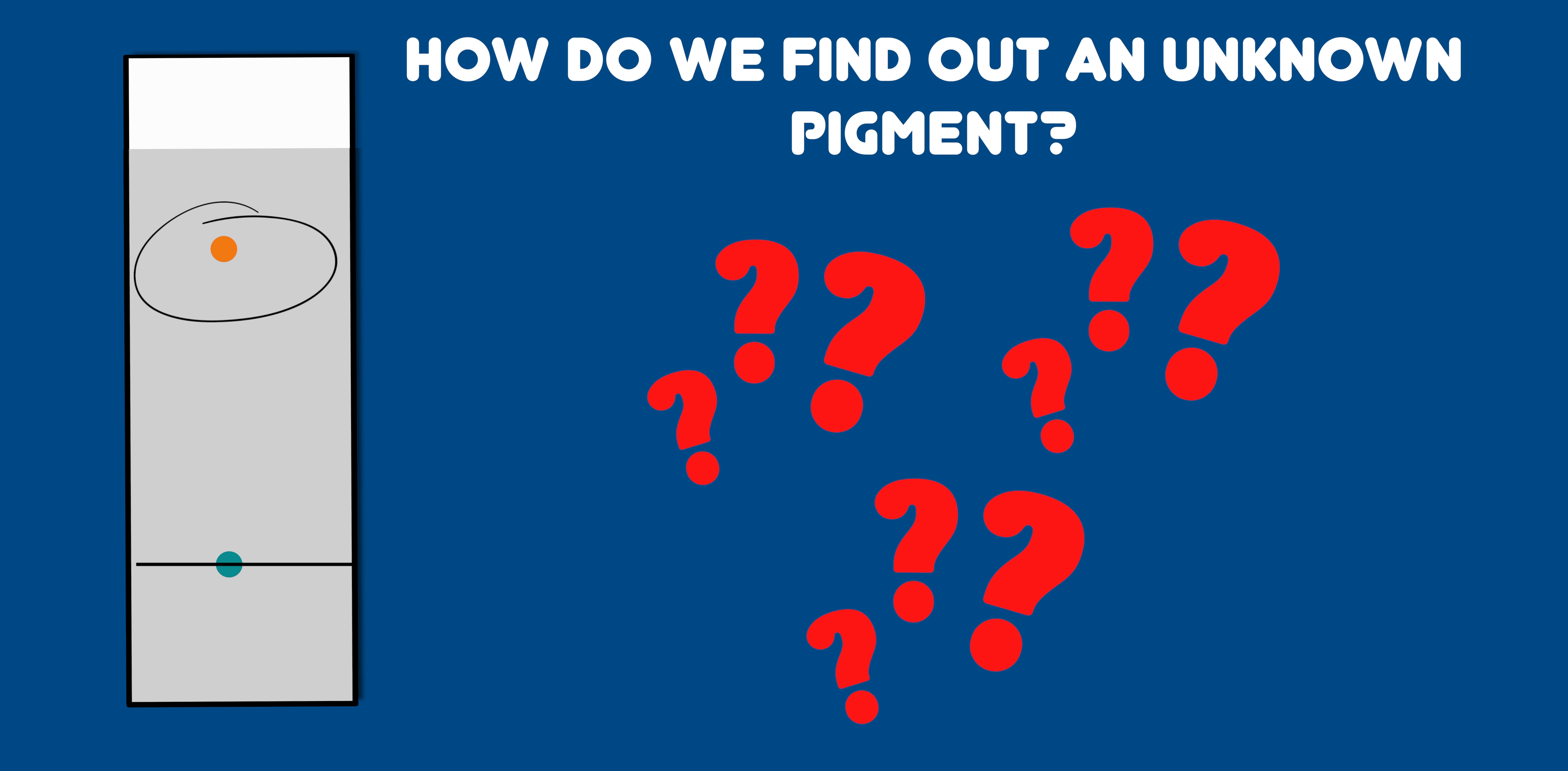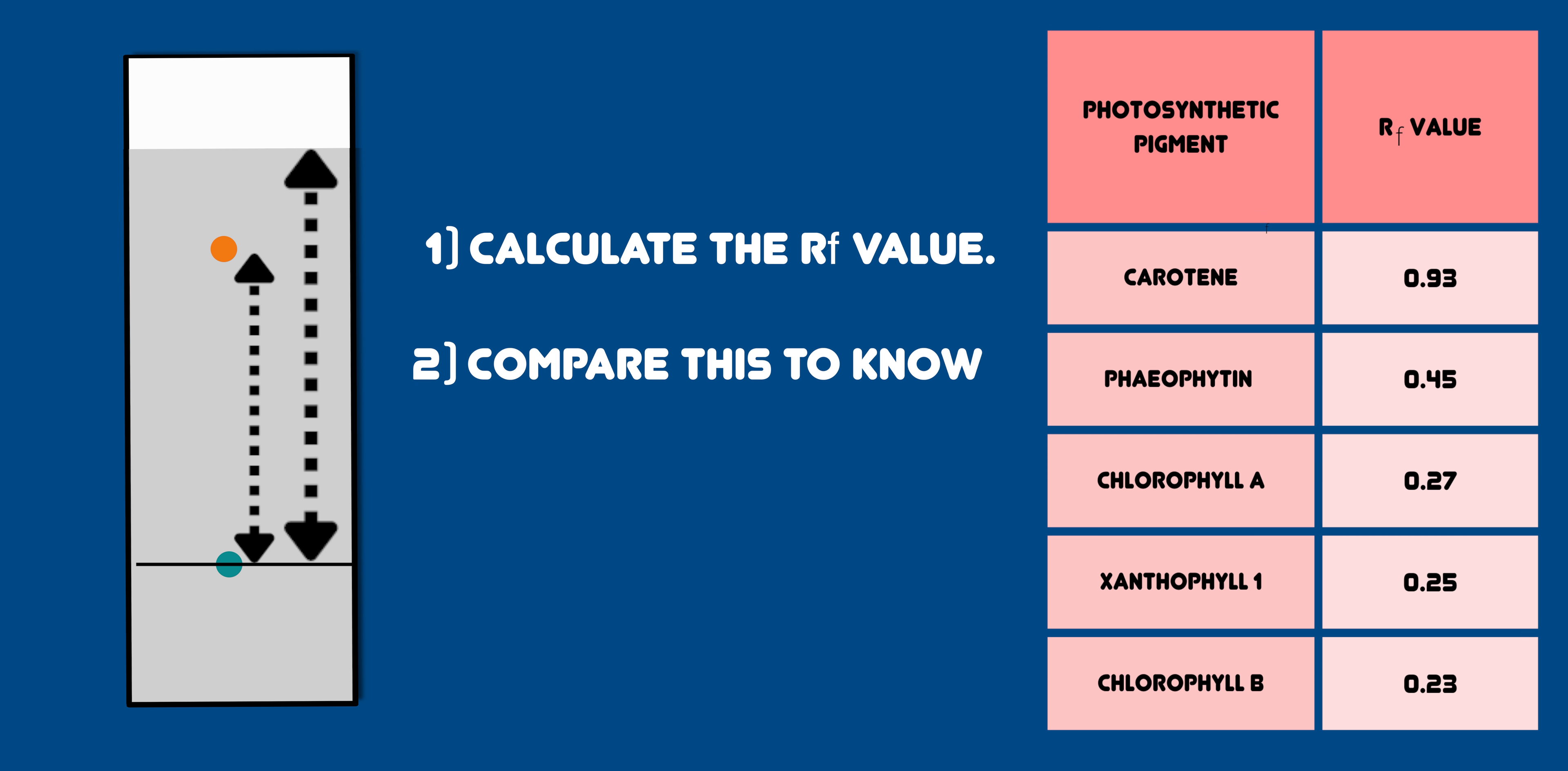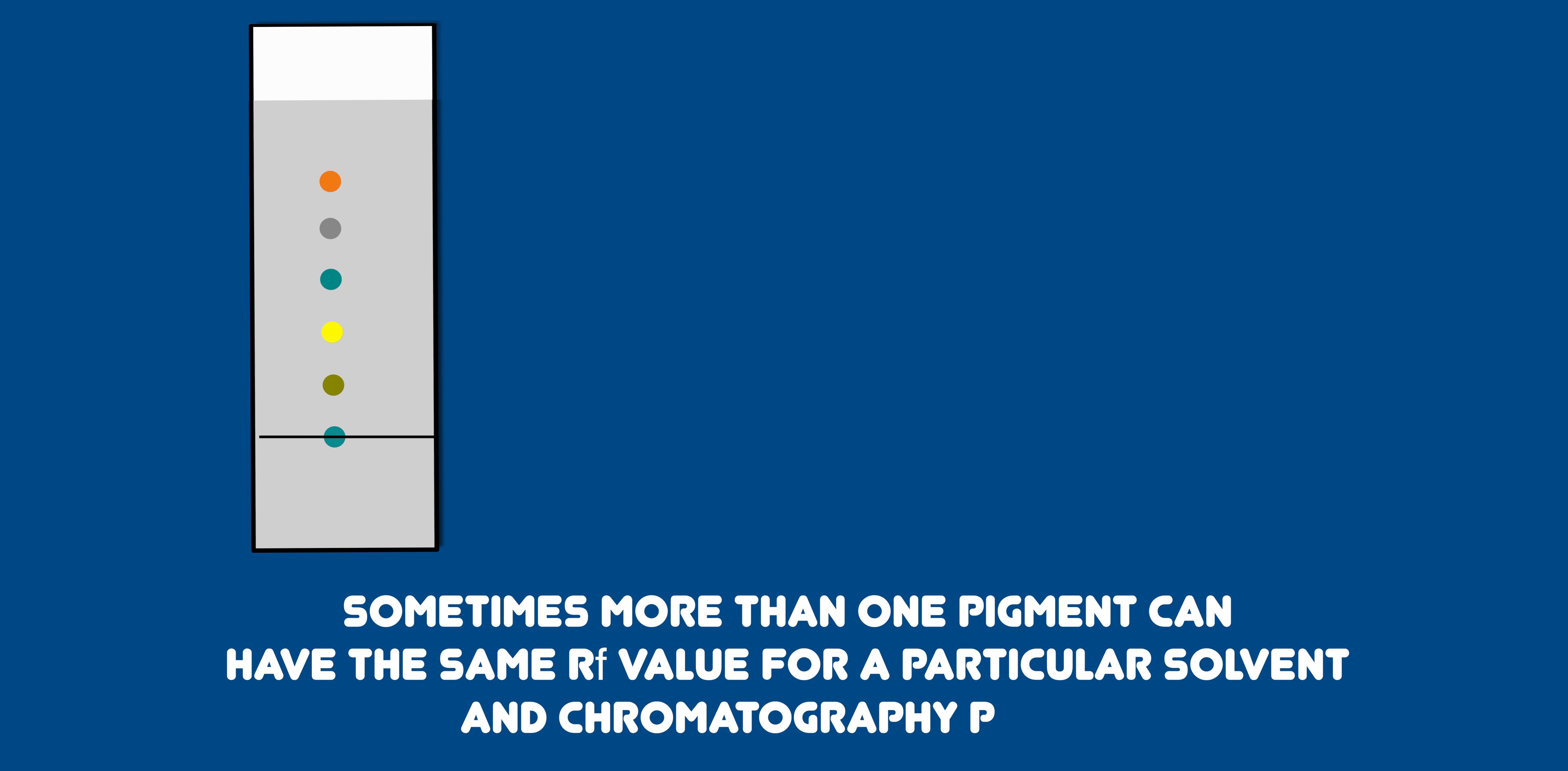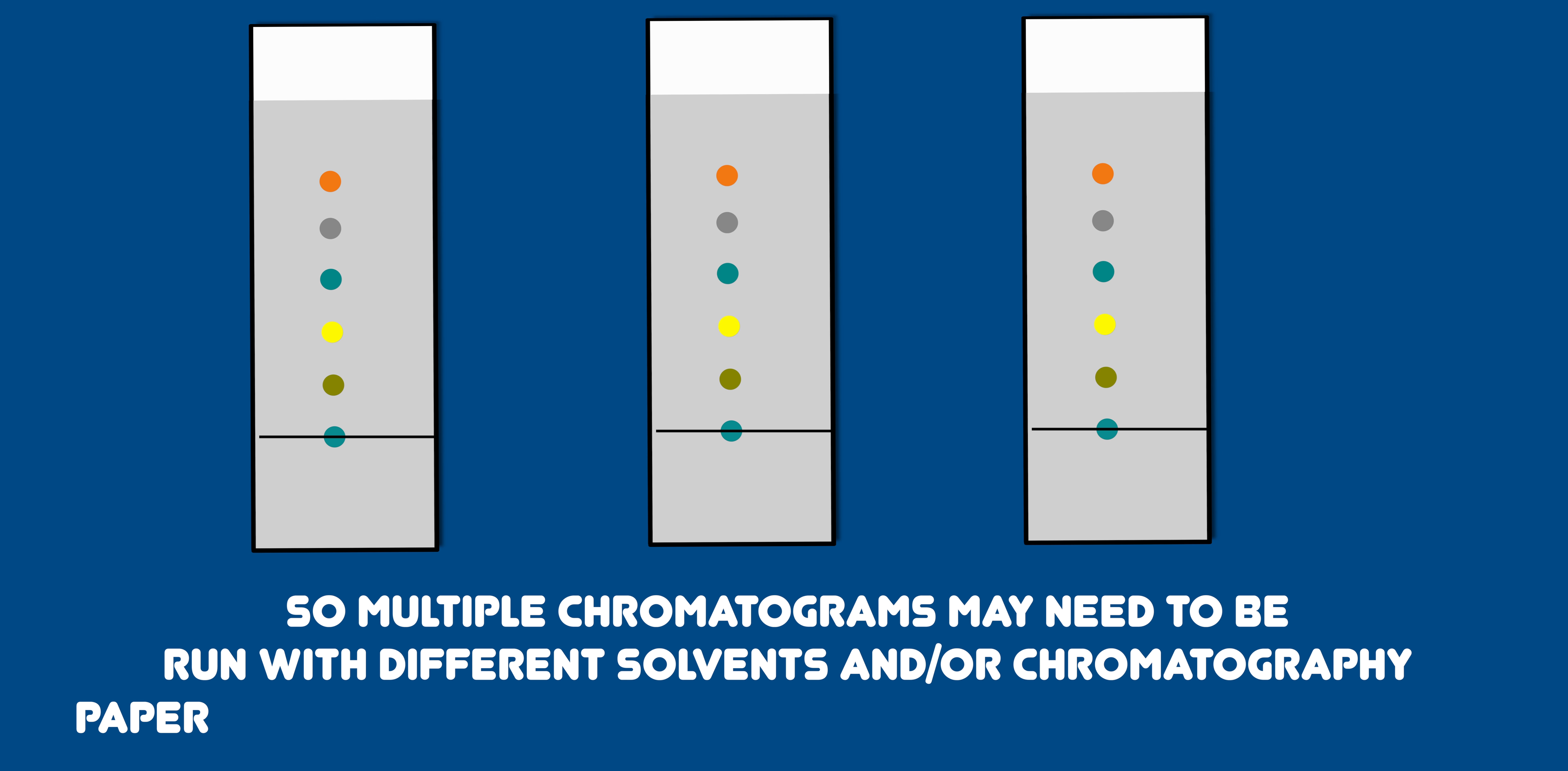If we wanted to find out what an unknown pigment is, I could calculate the RF value and then compare this to the RF value for known substances. Sometimes more than one pigment can have the same RF value for a particular solvent and chromatography paper. So multiple chromatograms may need to be run with different solvents or chromatography paper to find out the exact identity of the unknown pigment.